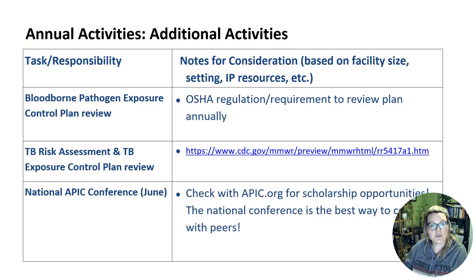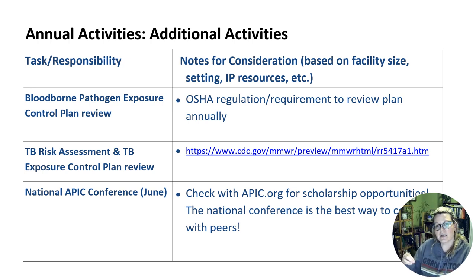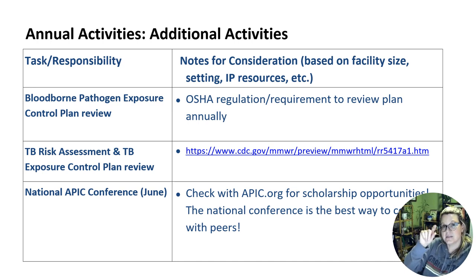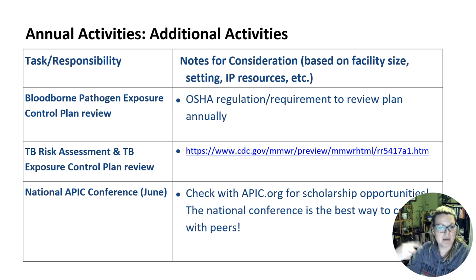Next is the bloodborne pathogen exposure control plan review. This is really important. In one of my past facilities, we were actually cited by the Joint Commission because we were only reviewing our bloodborne pathogen exposure control plan every three years with the rest of our policies and procedures. It is actually an OSHA regulation to review your plan at least annually. You really want to make sure that you're putting the review dates somewhere on the actual policy or plan. Once you're cited for something, you never make that mistake again.